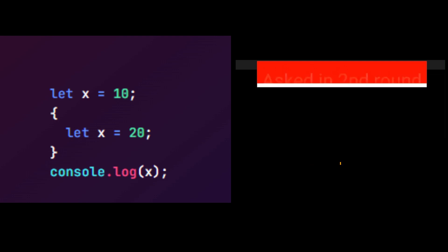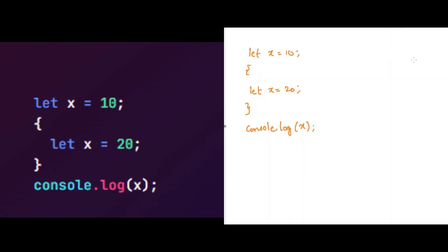Okay, one thing you need to remember in JavaScript is, whenever we declare a variable using the let keyword in JavaScript, it will become block scoped. Here we are declaring the variable with the let keyword, so x value will be 10 here. In the second line, we are declaring a block, and inside this we are creating the variable x and assigning the value 20 to it.